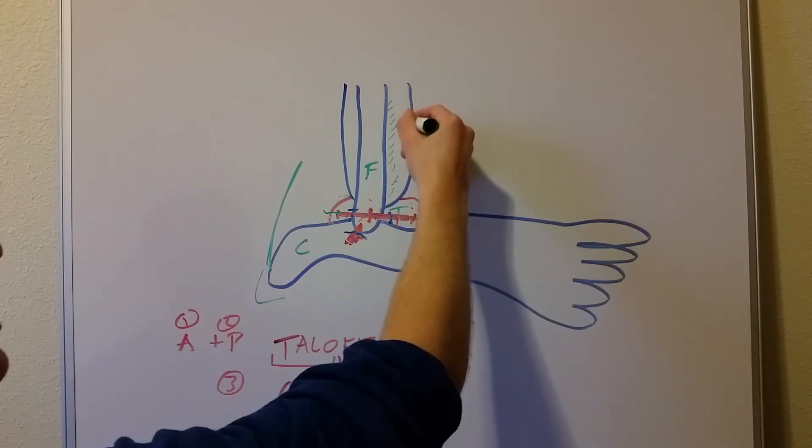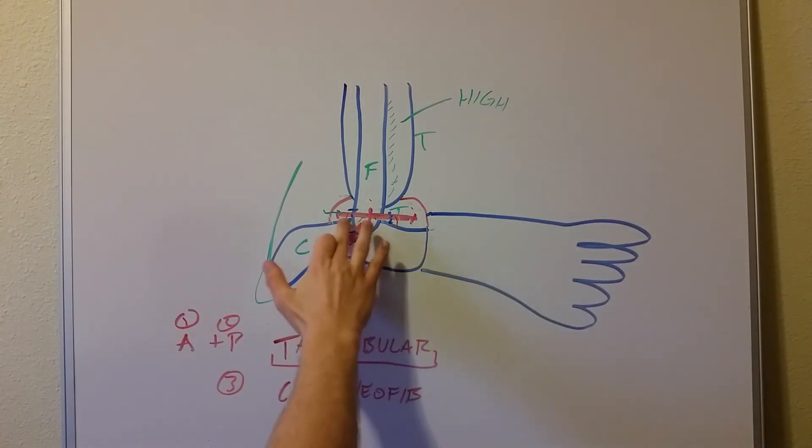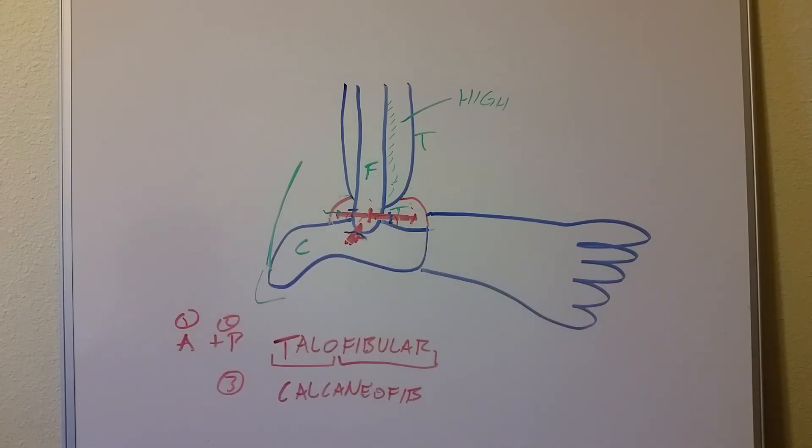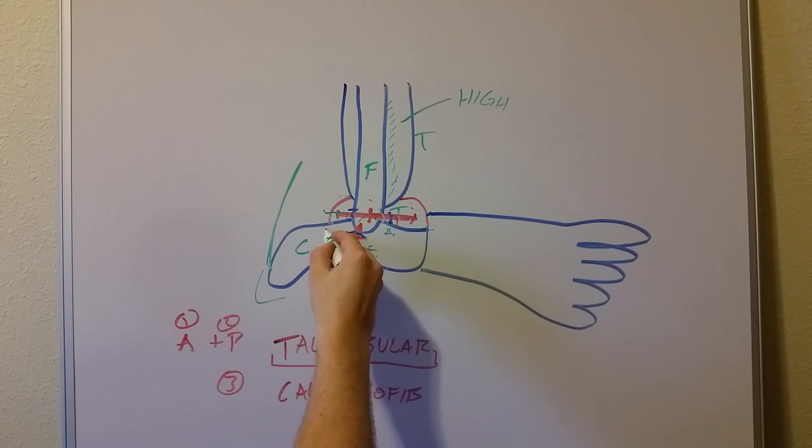That doesn't necessarily mean one of these higher ligaments was sprained and this lower one was not. That's something different. We're talking here about that inversion where the foot, the plantar surface, the foot turns inverted or to the medial side where you roll your ankle and grade one, grade two, and grade three. One being just the anterior talofibular, two being the anterior, and then work your way around. So it's the anterior and the calcaneofibular, and then grade three would be anterior, calcaneofibular, and posterior.